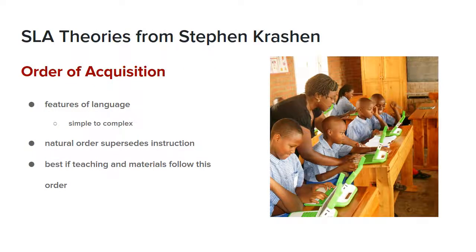Krashen also talks about the order of acquisition. If we think about all the structures and components of a language, some features are very simple and some are more complex. Naturally, learners are going to acquire simpler structures before they're ready to acquire more complex ones. So if a teacher tries to teach a very complex structure, learners can practice all they want, but they're not likely to acquire it if they haven't developed the foundational simple structures first. It's best to ensure learners have foundational features before moving toward more complex ones.